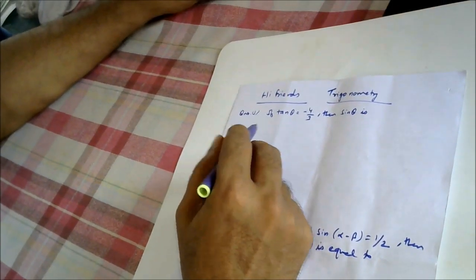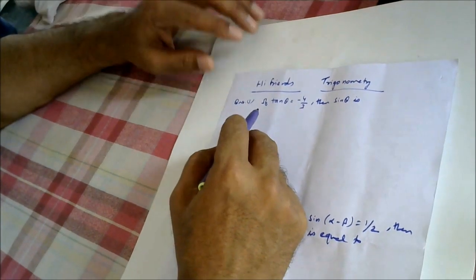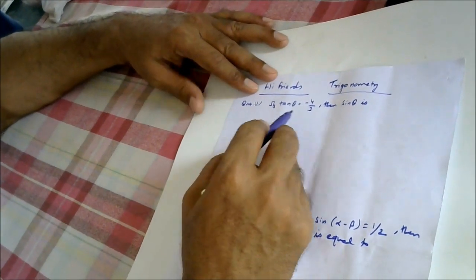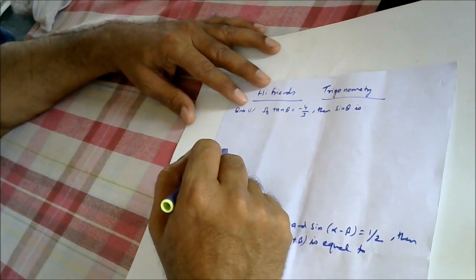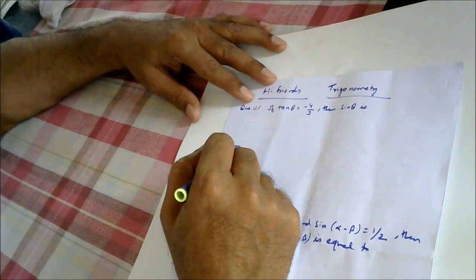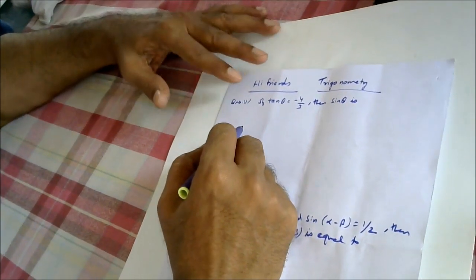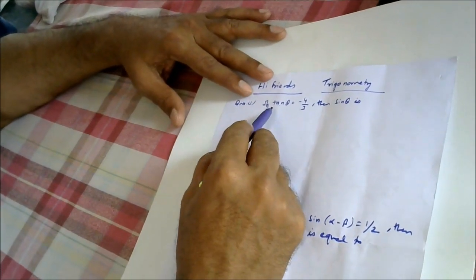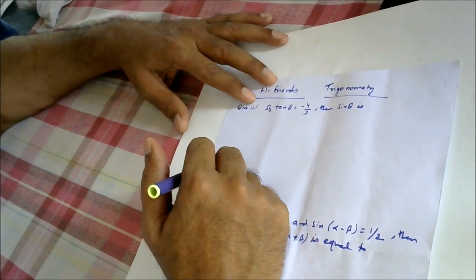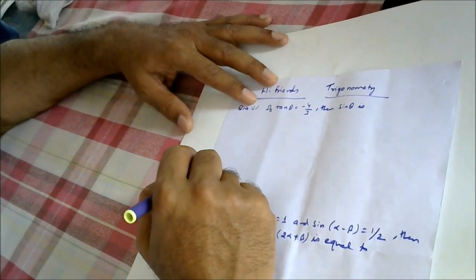So let us solve this trigonometry question. We are given one question. This question actually appeared in the IITG examination — related to basics only. It is given that if tan θ is equal to minus 4 by 3, then sin θ is what?